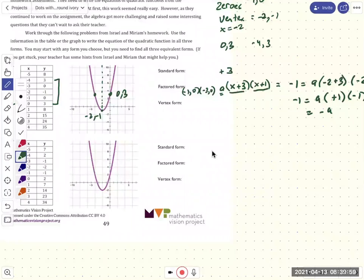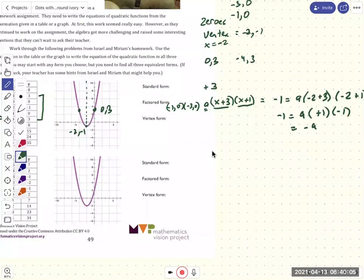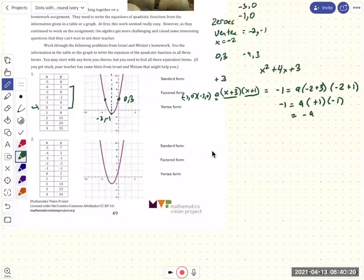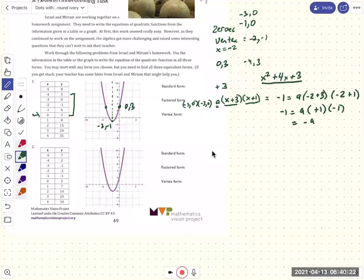Okay, so can we get the standard form from that? So then the standard form, we just multiply that out. So we have x squared, okay, and then plus plus. So it looks like plus 4x plus 3. Okay, so does that correspond to what we're seeing? Okay, so let's just try that. So we have x squared plus 4x plus 3.